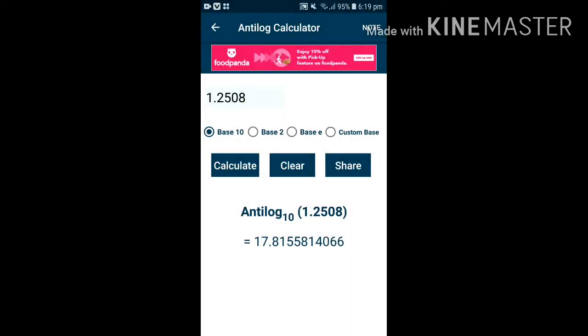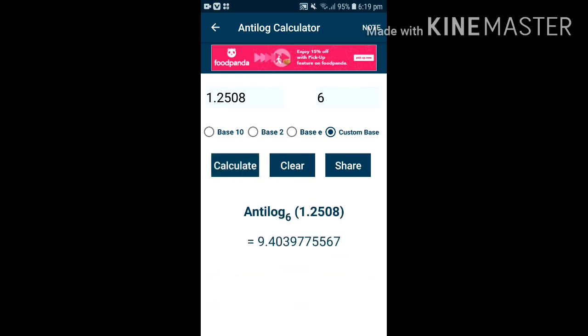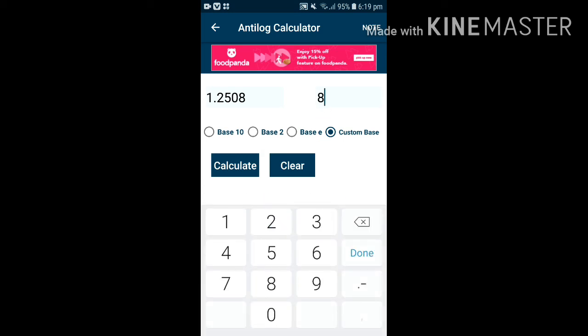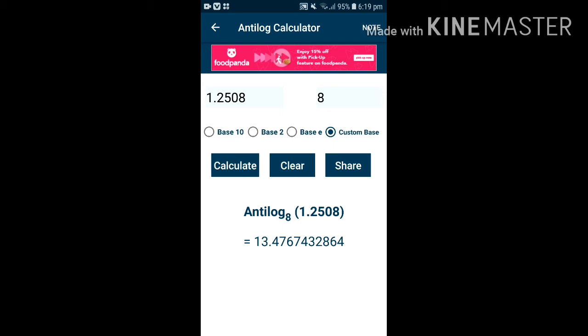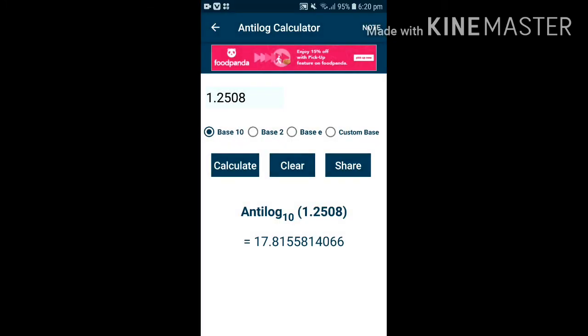Base 10, I have the antilog value. I will calculate the value for base 2, for base e. You can share or screenshot this. And custom base, I will enter and find the value. This app can also be used offline.